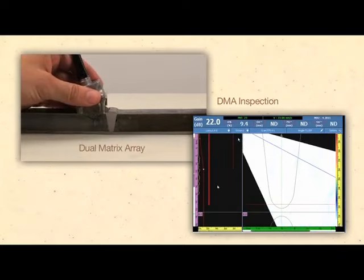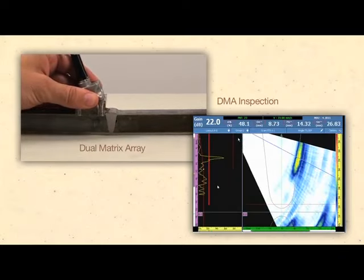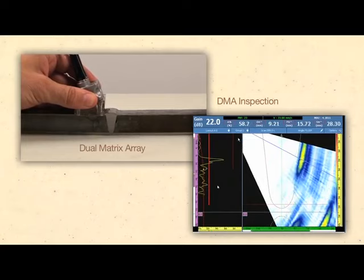DMA probes are only recommended for materials and weld bevels where shear wave pulse echo inspection is not possible.